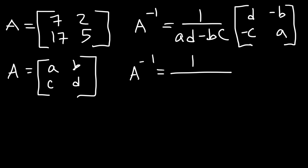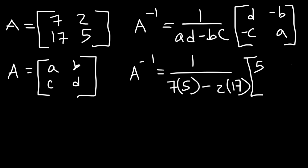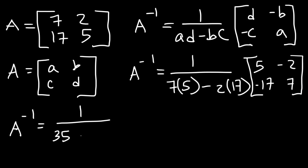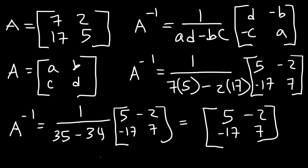Matching up the letters, we can see that A is 7, D is 5, B is 2, and C is 17. So D is 5, negative B is negative 2, negative C is negative 17, and A is 7. Then 7 times 5 is 35, 2 times 17 is 34, and 35 minus 34 is 1, so this whole thing is 1 over 1. The inverse of matrix A is simply 5, negative 2, negative 17, and 7.